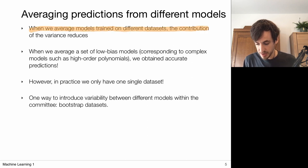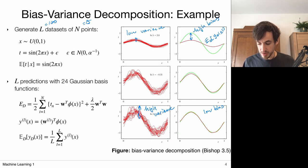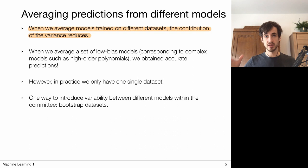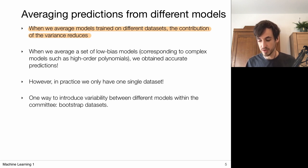That's the main idea behind committees: work with flexible models that have low bias, and use model averaging to reduce the variance. When we average models trained on different datasets, the contribution of variance reduces. When we average a set of low-bias, high-variance models, we obtain very accurate and stable predictions in the end. But we're back to the problem that in practice we only have one single dataset, so it's weird to split it into small parts to come up with very poor models just to average them afterwards.